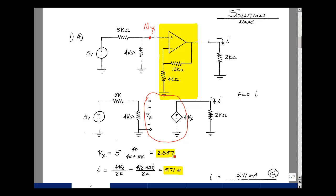Then multiply that by 4, and that would be the voltage here. And the current that flows would be that voltage divided by 2K. So 4 times 2.857 divided by 2K is the value of the current, and that's 5.71 milliamps.